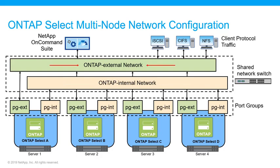The external network provides access to NAS protocols and iSCSI SAN traffic. Management and inter-cluster replication, SnapMirror, and SnapVault traffic also use the external network. Optionally, the cluster and node management traffic can be segregated via a dedicated port group.